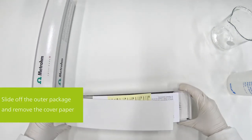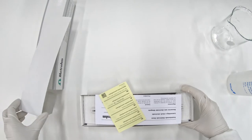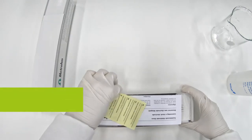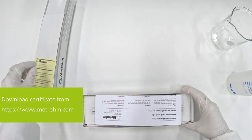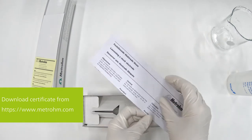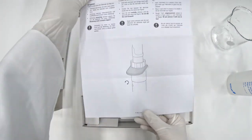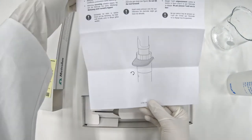Slide the outer package off and remove the cover paper. You'll find a notification where you can download the electrode certificate and the guidance on how to loosen the electrode from the firmly pressed storage vessel.